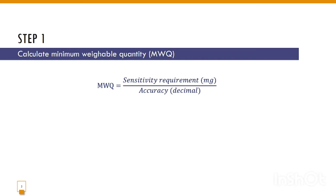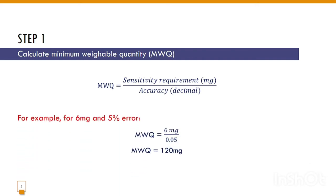For example, if the sensitivity requirement of the instrument is 6 mg and the error is 5%, we convert the percentage into decimal points to get 0.05. Placing this in the equation, the minimum weighable quantity will be 120 mg.